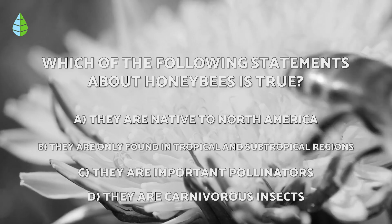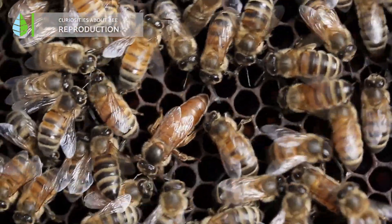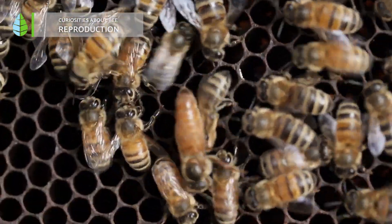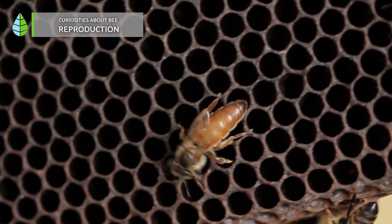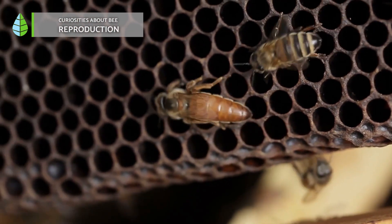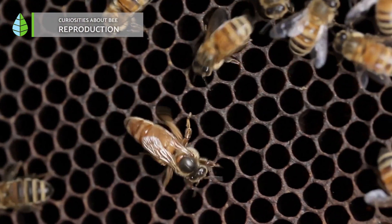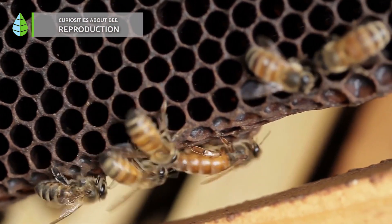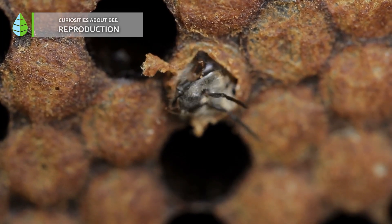Curiosities about bee reproduction. The queen bee can lay up to 1,500 eggs per day throughout her life. However, sometimes the queen may have physical limitations that prevent her from laying a sufficient volume of eggs to regenerate the hive's population. In these cases, worker bees create a new queen.